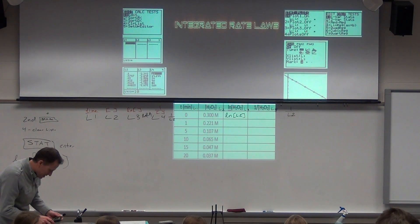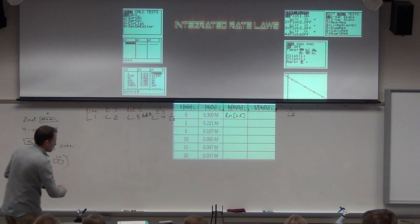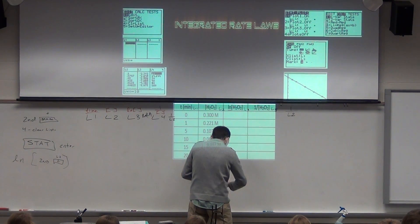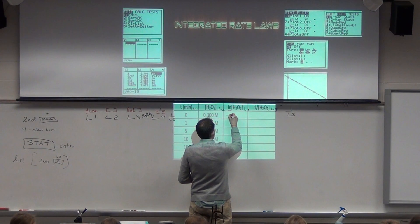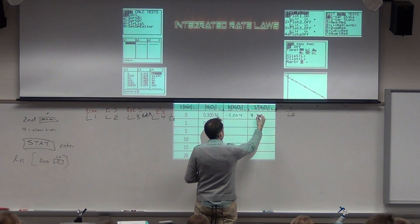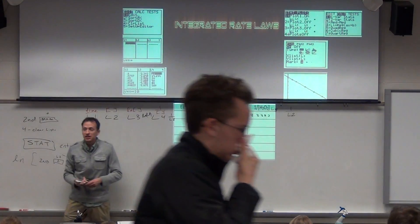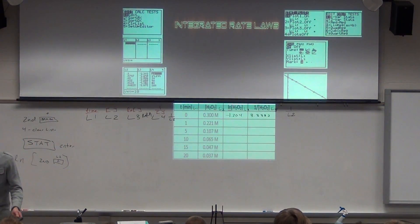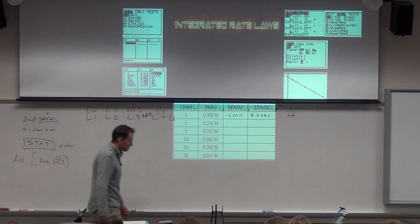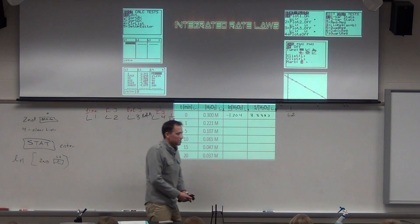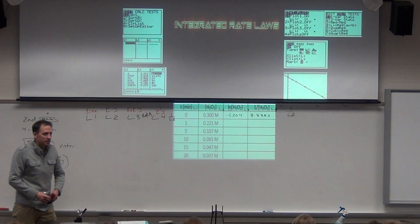Then go highlight L4 and do 1 over L2. You need to highlight the literal L4 header — if you put it in that line it doesn't work. So highlight L4 and make it 1/L2. L2 is natural log, L4 is inverse. L2 is on the 2 button. If you're doing this right, these are the first numbers that should pop up — check that those are the numbers you have.